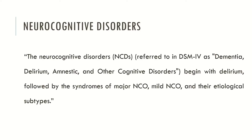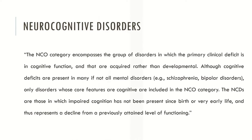Now let's see the neurocognitive disorders according to the DSM-5. Neurocognitive disorders, previously known as dementia, begin with delirium followed by the syndromes of major neurocognitive disorder and mild neurocognitive disorder. The neurocognitive category encompasses the group of disorders in which the primary clinical deficit is in cognitive function and that are acquired rather than developmental.